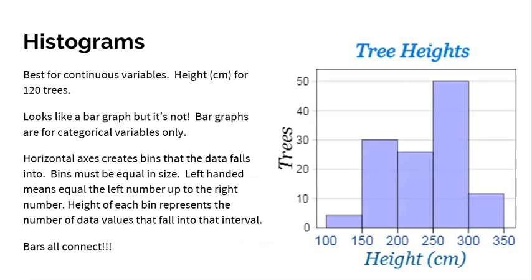The final way that we could display quantitative data, and this works absolutely best for continuous quantitative values, is a histogram. Histograms look a lot like bar graphs, but don't you dare ever call a histogram a bar graph or a bar graph a histogram. They are very different things. Histograms have bars, but they're for quantitative data. Bar graph is the term we use for categorical variables. Histogram is the term we use for quantitative variables.